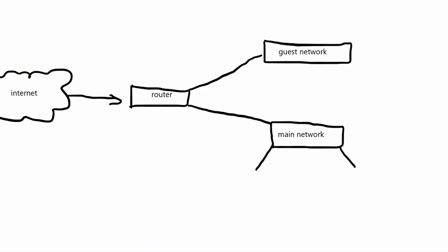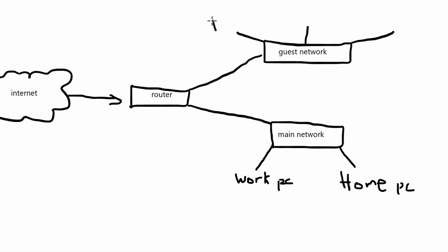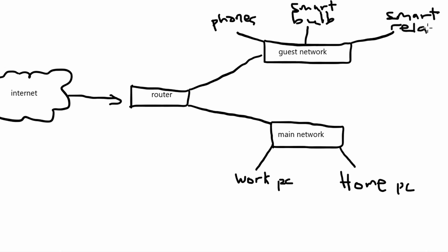The sixth security measure is isolating IoT devices onto a dedicated network to contain potential security vulnerabilities. Because IoT devices are always exposed, they can be easily hacked. By segregating these devices from our main network, the impact of a compromised smart device on Home Assistant is minimized. This approach prevents unauthorized access through vulnerable IoT devices, bolstering the overall security posture.